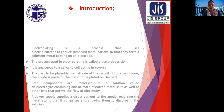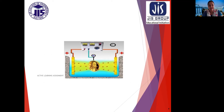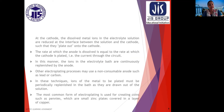Here from the power supply, cathode and anode are connected, and the anode is used with a metal rod. At the cathode, the dissolved metal ions in the electrolyte solution are reduced at the interface between the solution and the cathode, such that they plate out onto the cathode. The rate at which the anode is dissolved is equal to the rate at which the cathode is plated — that is the current through the circuit. In this manner, the ions in the electrolyte bath are continuously replenished by the anode.